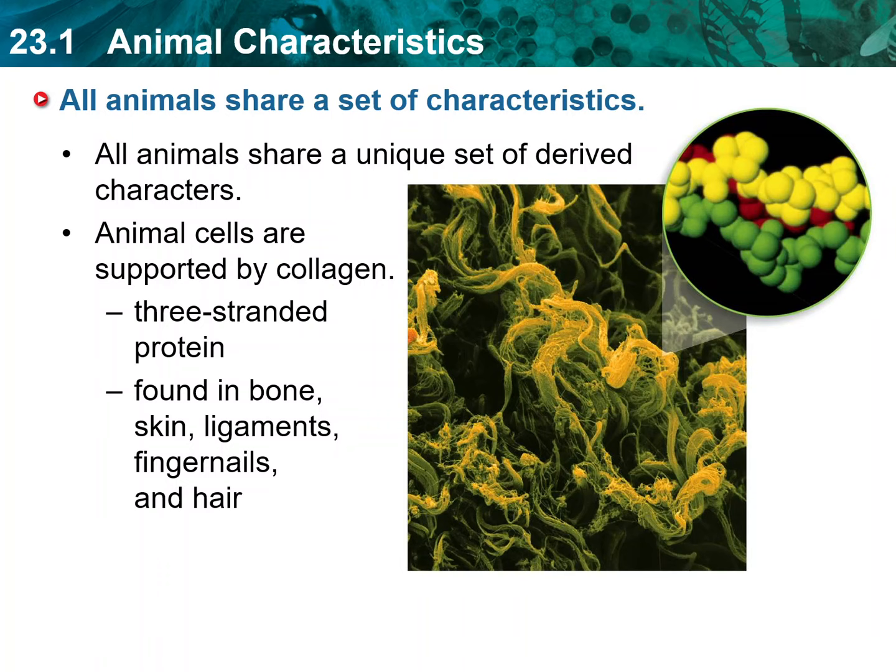Unlike the cells of plants and fungi, animal cells lack rigid cell walls. Therefore, animals cannot rely on the rigidity of their cells for structural support. Collagen, shown on the screen, is a three-stranded protein that is unique to animals. Animal body parts that contain collagen include skin, bones, ligaments, fingernails, and hair. Individual collagen proteins combine with one another to form rope-like fibers that are both strong and flexible. These fibers form an extracellular network that many animal cells use for support. Unlike a cell wall, the collagen network does not glue cells in place, so it is possible for cells to move within the animal's body. Collagen also forms an integral part of the jointed skeleton that many animals use to move their entire bodies.